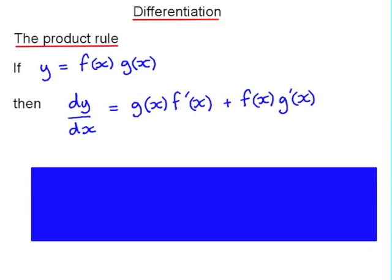Starting with the product rule, as the name would suggest, this is used for differentiating functions which are products of functions. So it's for y equal to f of x multiplied by g of x — two functions of x. Now if we differentiate y with respect to x, the product rule says that dy/dx is g of x multiplied by f dash of x, the derivative of f of x, plus f of x multiplied by the derivative of g of x.